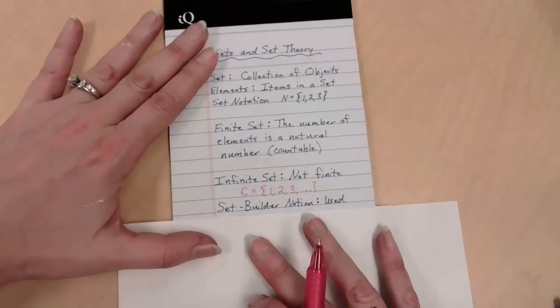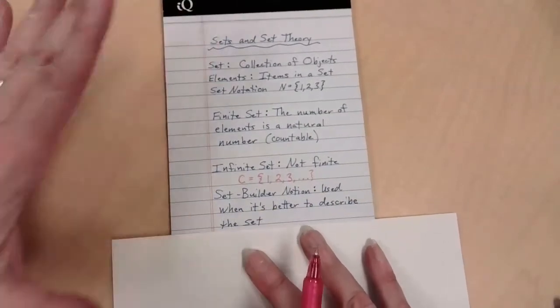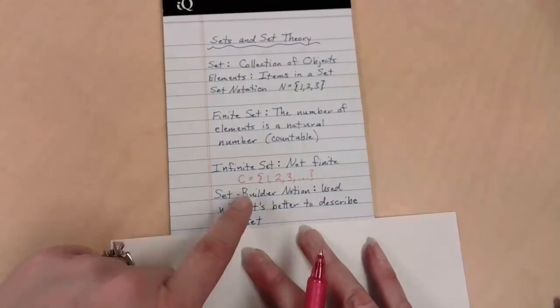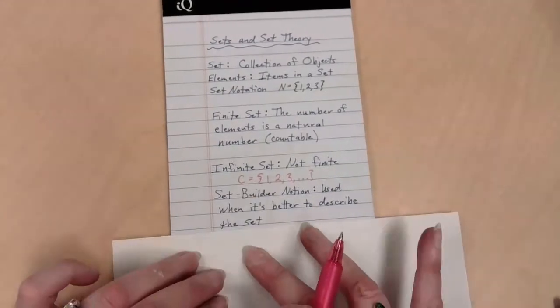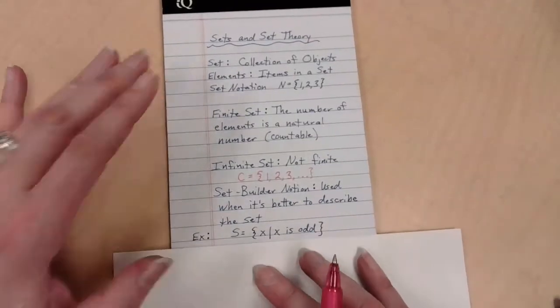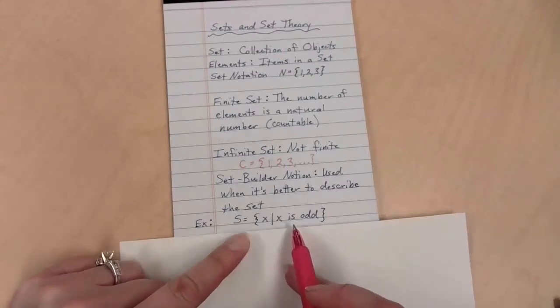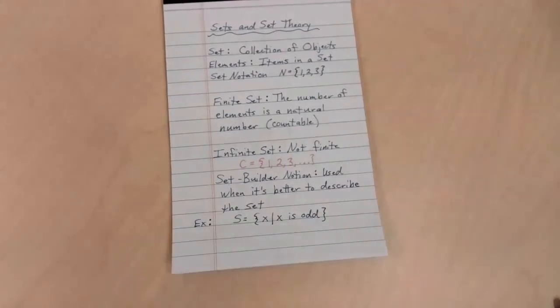Set builder notation is something that can be interesting as well. Sometimes it's simply easier to describe a set than it is to try to list the things that are in it. So for example, S could be the set of numbers.